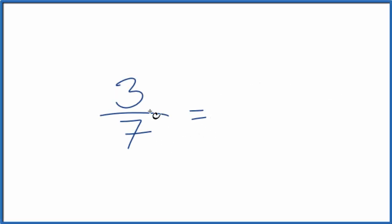Let's write a few equivalent fractions for 3 sevenths. That's 3 over 7. What we're trying to do is write a fraction that has the same value as 3 sevenths, but a different numerator and denominator.